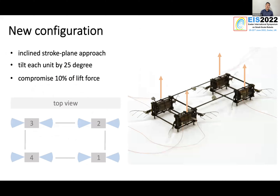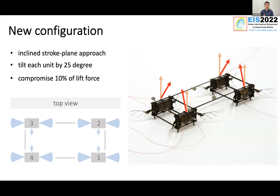To tackle that, we came up with a new configuration using the inclined stroke plane approach. You can imagine it as tilting each individual unit inward by 25 degrees, as you can see from the red arrows. So the lift force is no longer only pointing upward — from the top view, you can also see a horizontal force on the robot. By doing that, we are able to actuate the yaw motion. Of course, this compromises some lift force and requires a higher driving voltage, but since we had a lift-to-weight ratio around 3 to 1 in the previous study, and real-world experiments show no problems with the actuator handling slightly higher driving voltage, this is acceptable.